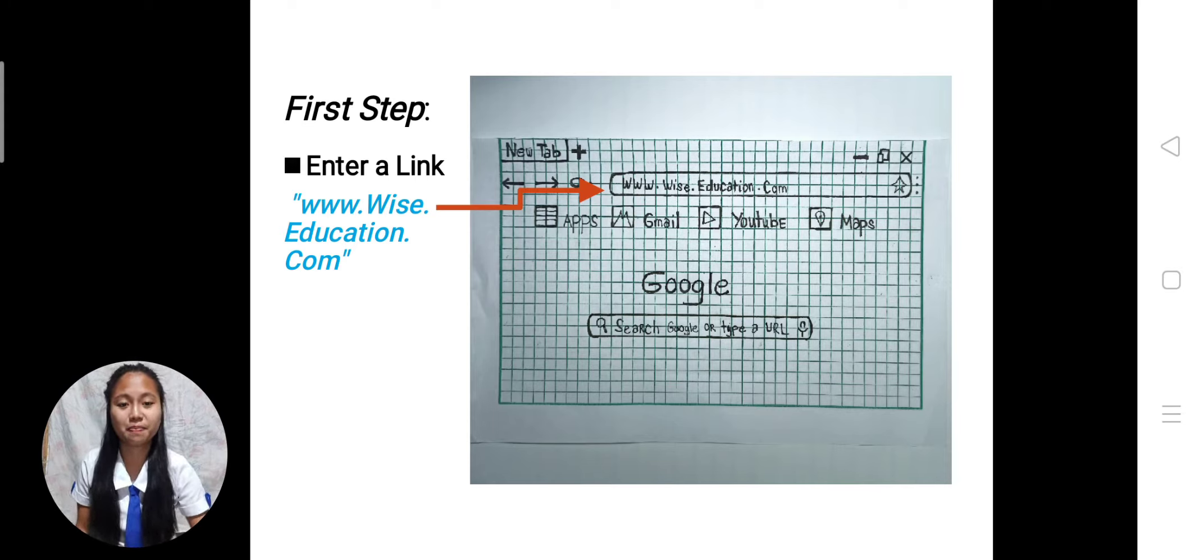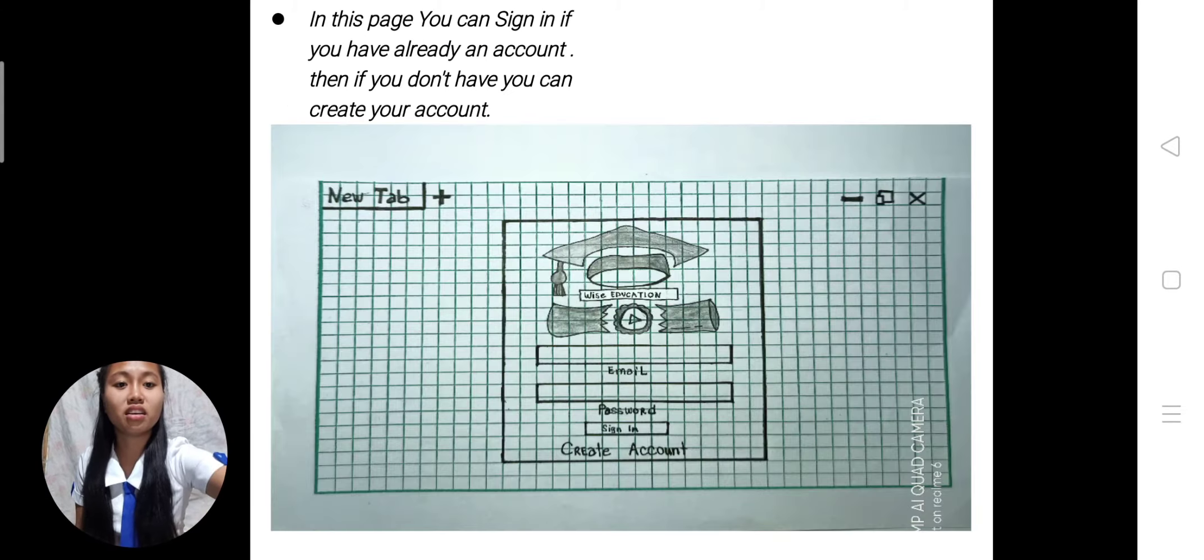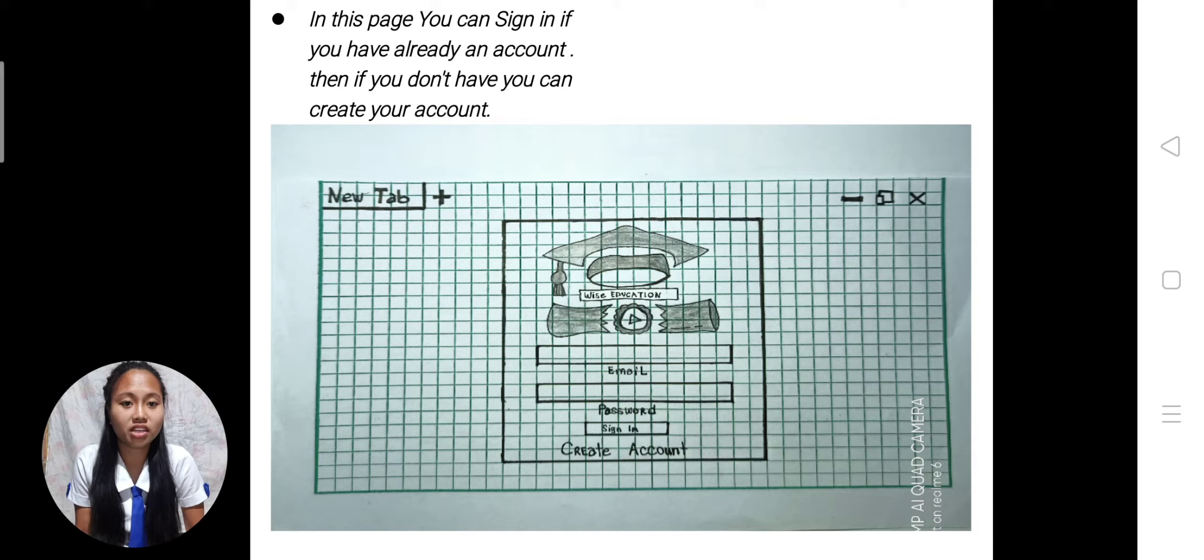First step: Enter a link. There is my arrow and www.wise.education.com. You can enter a link in this page. You can sign in if you have already an account.